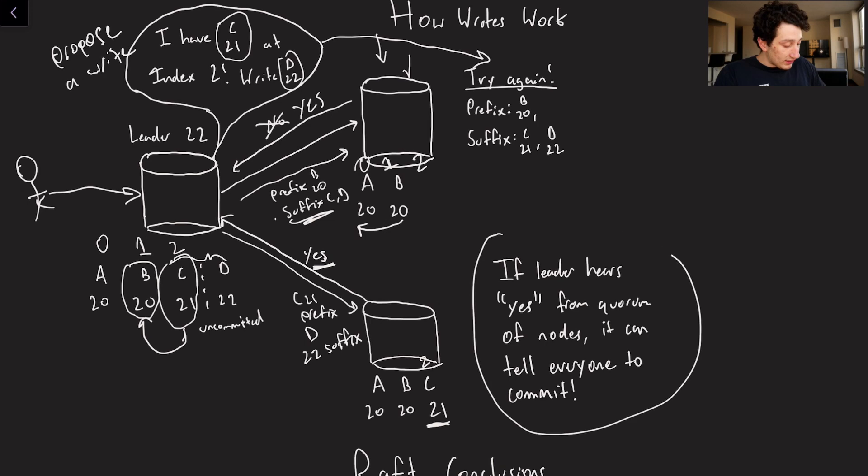So basically, how this works is like so, if the leader hears yes, from a quorum of nodes, it can commit that write locally. And it can also tell the other nodes to commit that write. Until then, it's like a two phase commit where, you know, once you respond, yes, for the first time, you're waiting, you have the write locally, but it's not committed. And then finally, once you hear back saying commit, then you go and do d22.